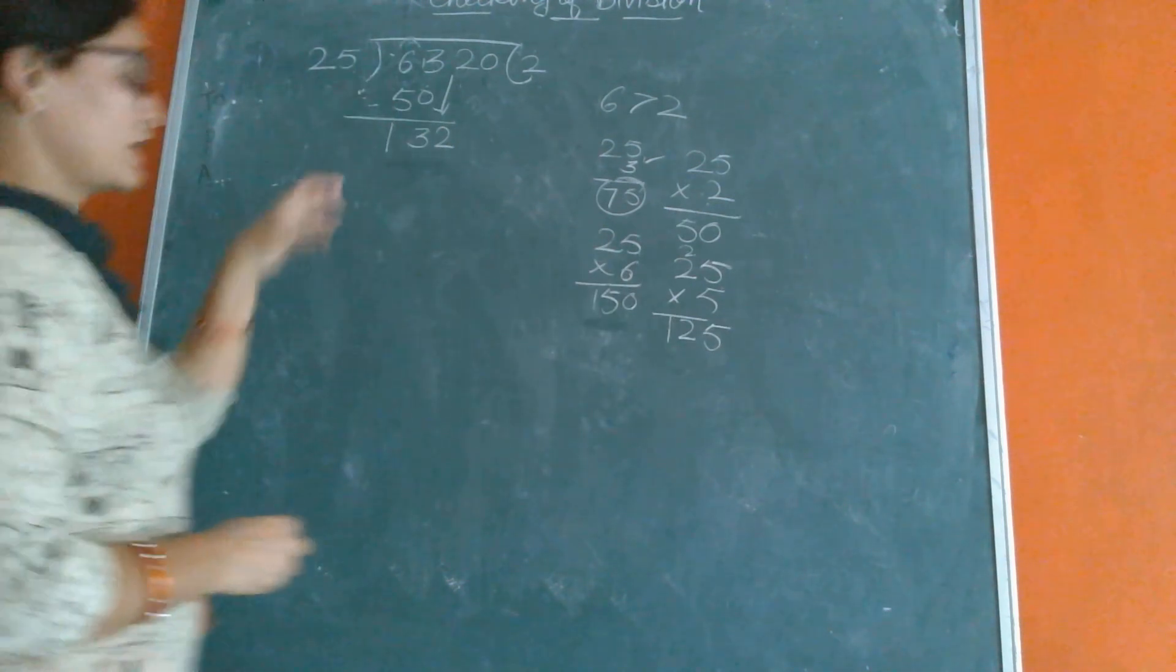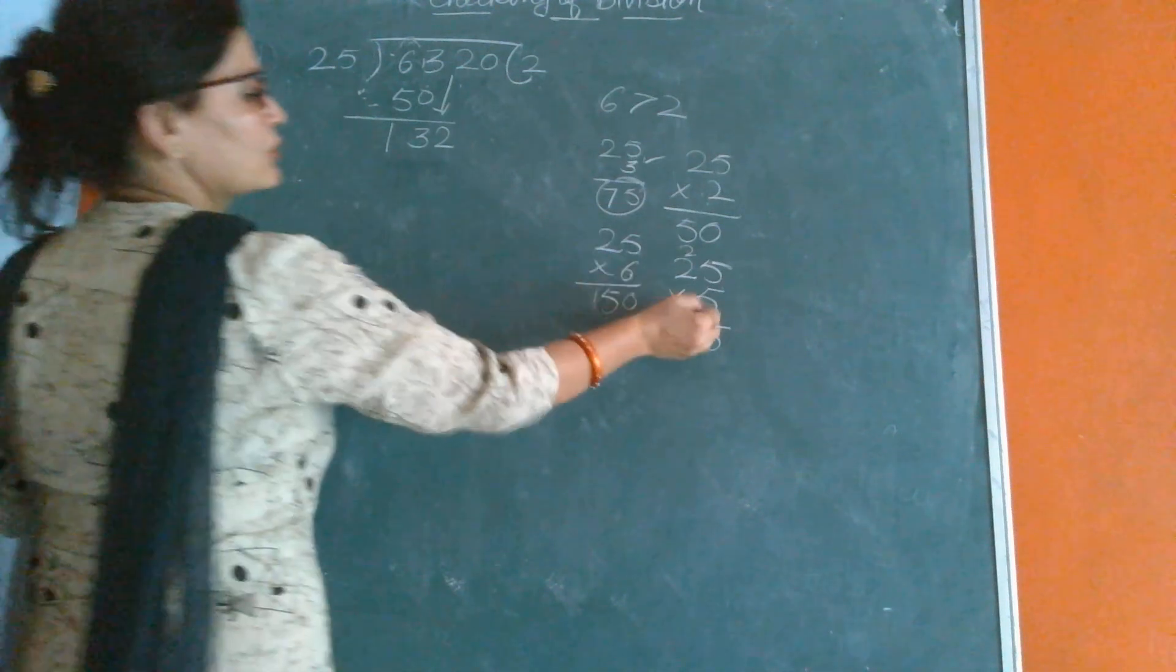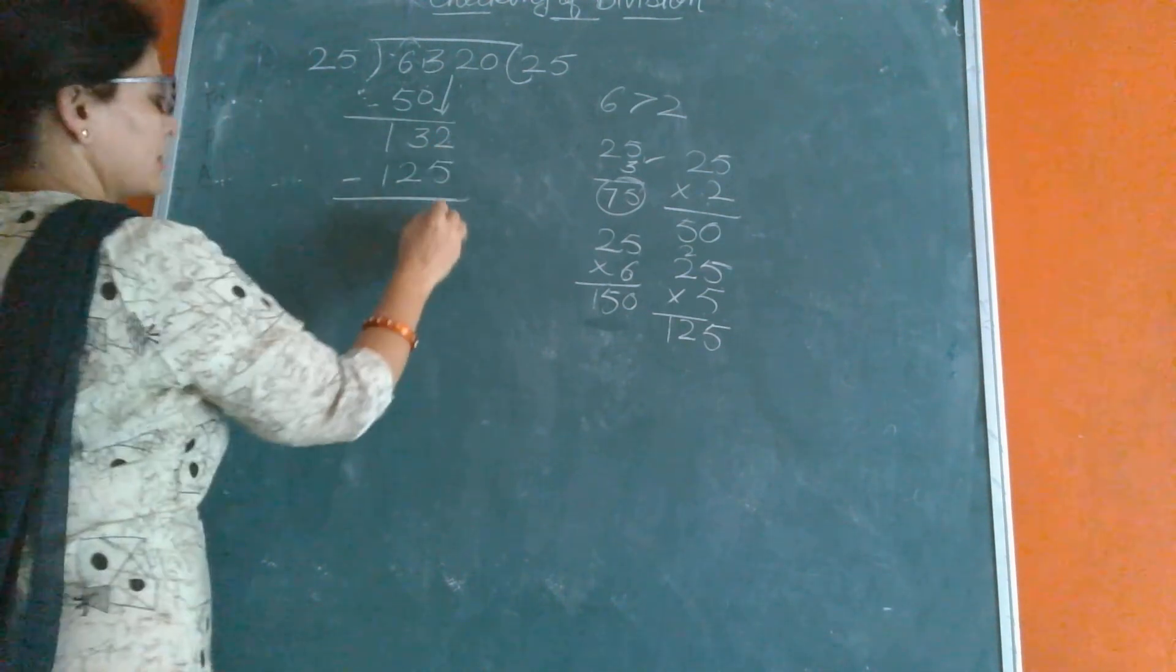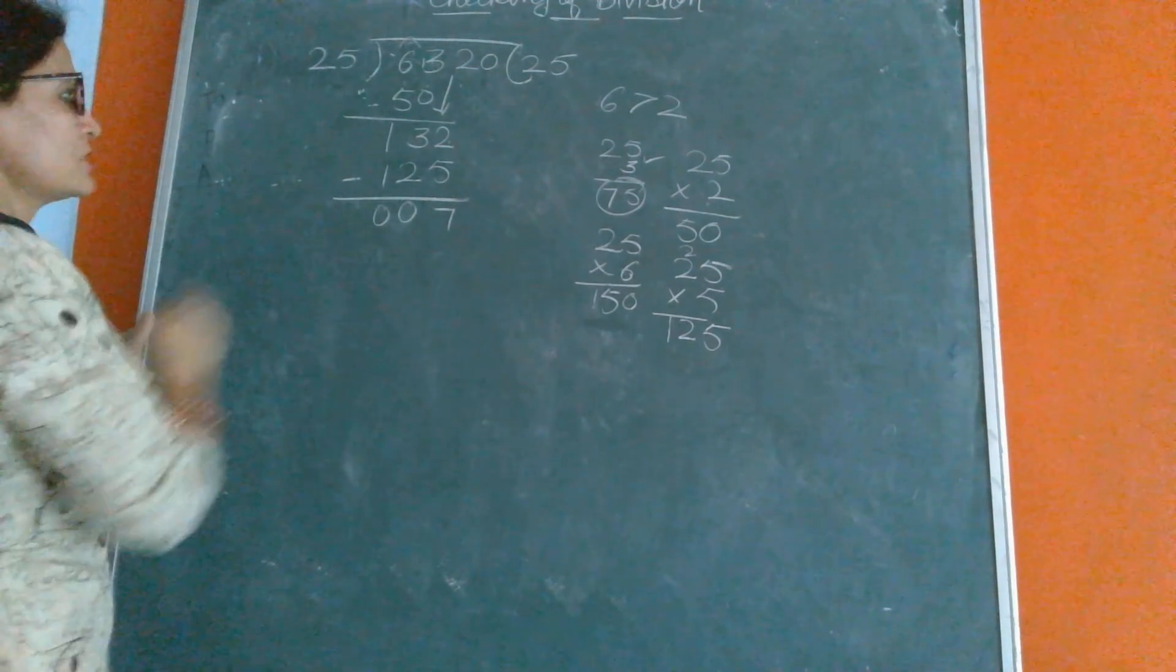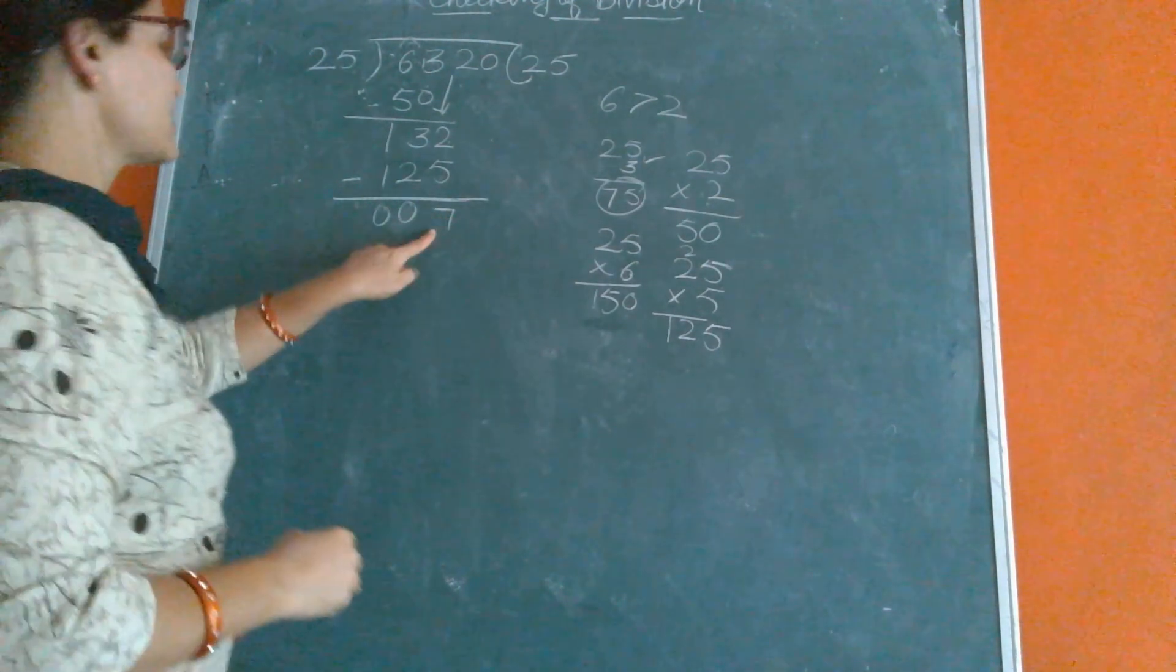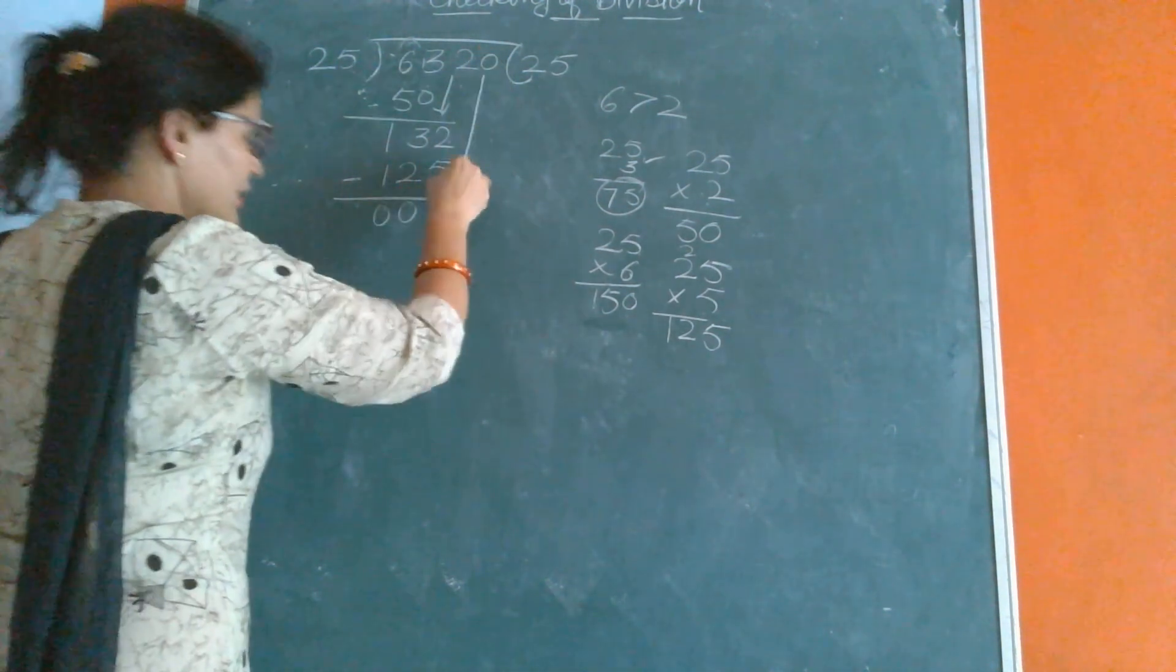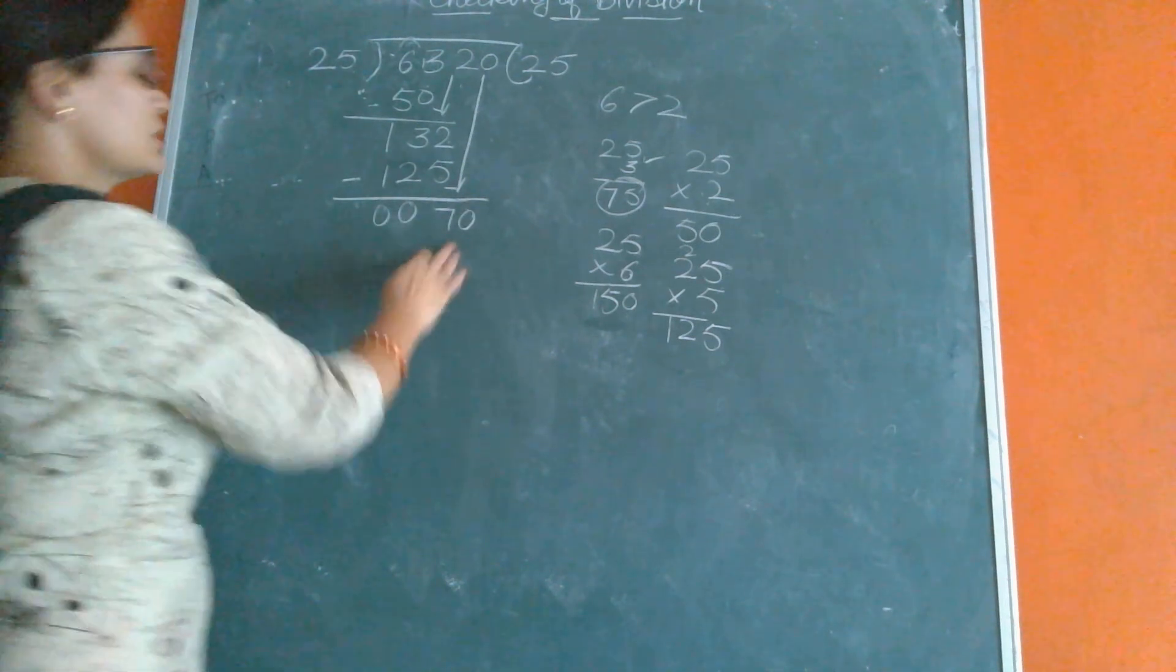So we can subtract easily from 132. It will go on 5. 125. Now subtract: 2 minus 5 is 7, 3 minus 2 is 1, 1 minus 1 is 0. Now we have 7 remaining. 7 is less than 25 again. Now we will bring down from the dividend. In dividend is 0. Now we have 70.